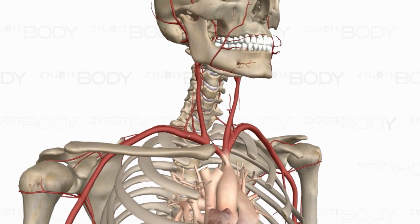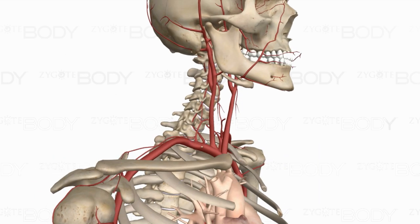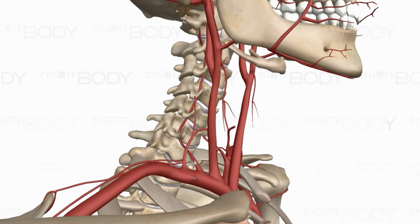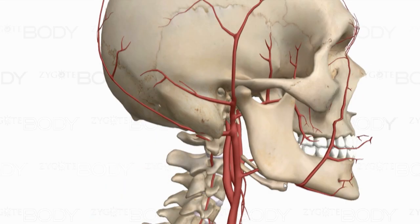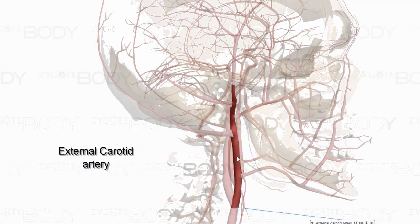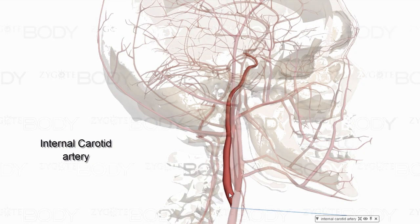Moving up from the brachiocephalic trunk, we see the right common carotid, and then the vertebral artery, which passes through the transverse foramen of the cervical vertebrae. The right common carotid then branches off into the external carotid and the internal carotid.